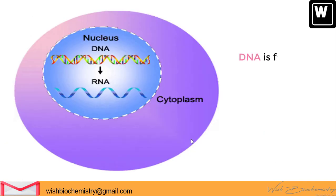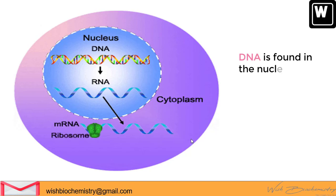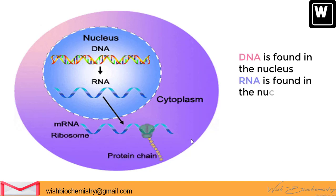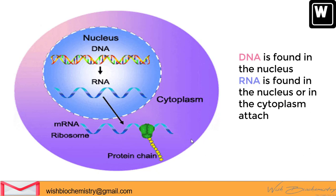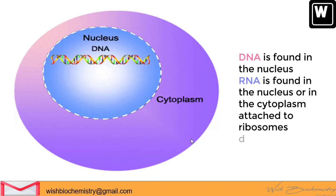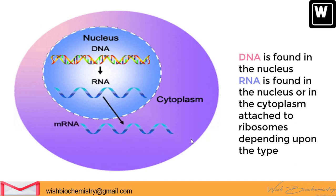DNA is found in the nucleus as it is too big in size to leave the nucleus. RNA is synthesized in the nucleus but is smaller in size and can leave the nucleus easily, so it is found mainly in the cytoplasm. Its location also depends upon the type of RNA.